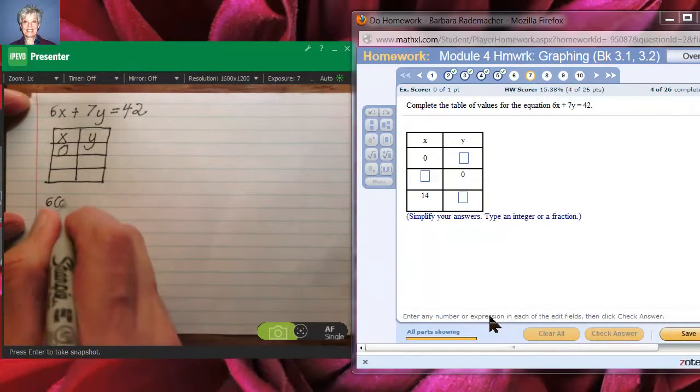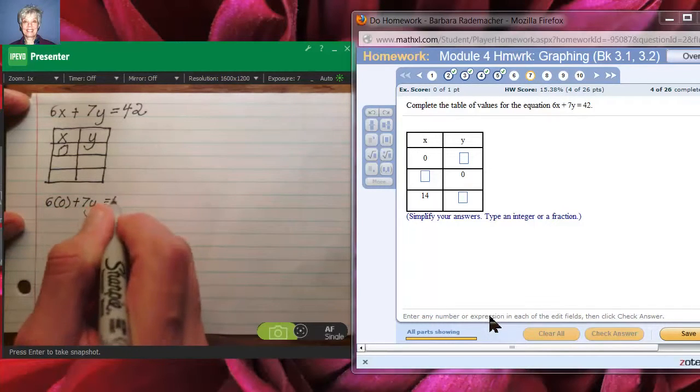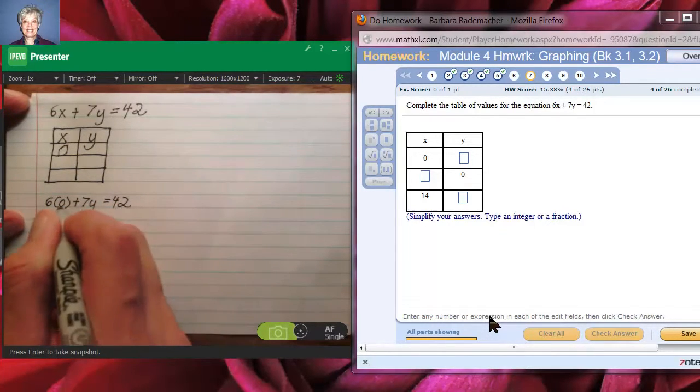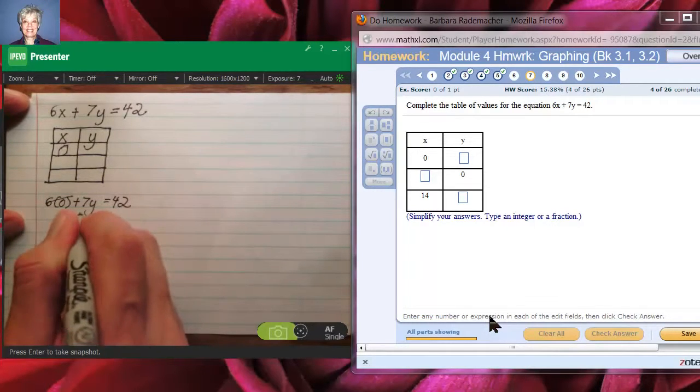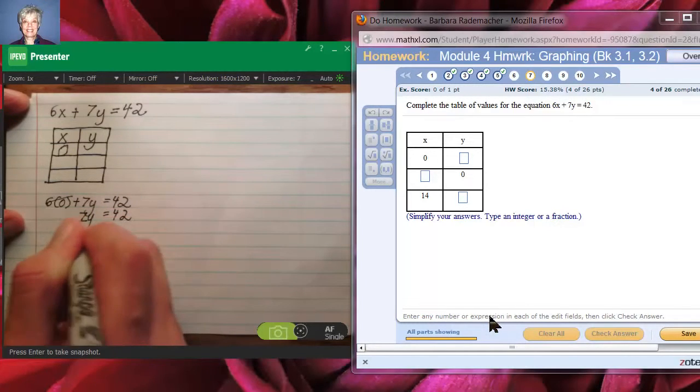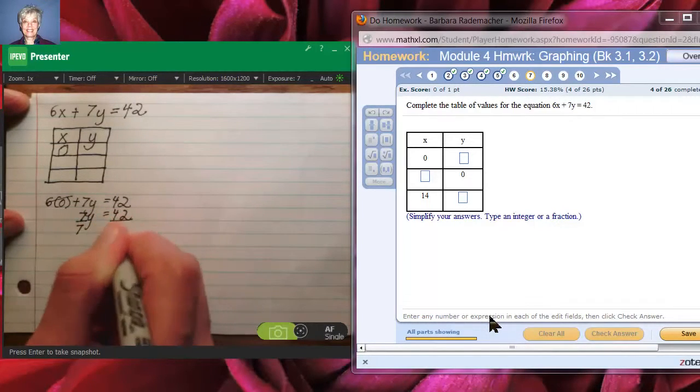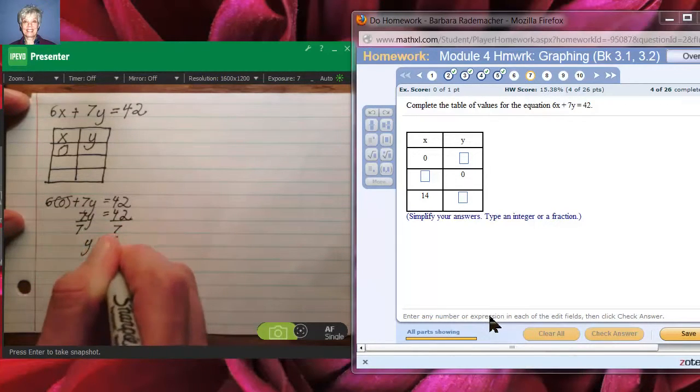So 6 times 0 plus 7 times y equals 42. 6 times 0 is 0, so we're going to say 7y equals 42. Then divide both sides by 7 to get the y by itself, and we'll have y equals 6.